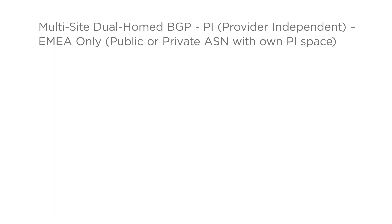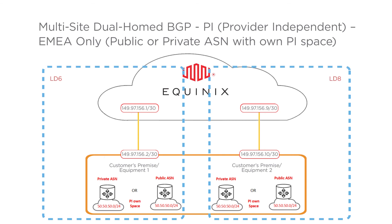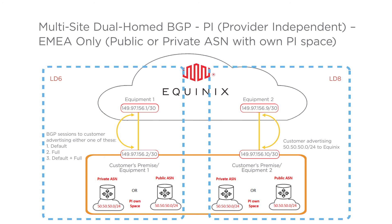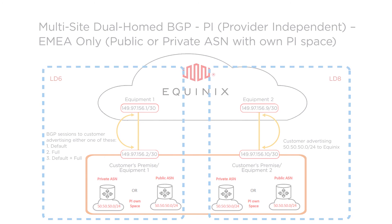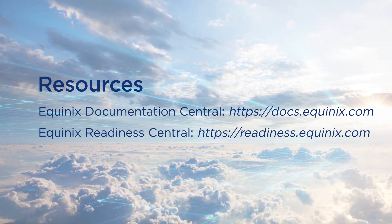Multi-site dual-homed BGP, PI — provider-independent, EMEA only — public or private ASN with own PI space. This is similar to the previous example where the customer takes a dual-home service split across two sites, except here the customer has their own PI space. The customer's own subnet has to be greater than or equal to /24. They either have their own public ASN or are using a private ASN assigned by Equinix. Equinix provides two IPv4 /30s or two IPv6 /126s for configuration, free of charge. BGP policy is used to select default routes, full routes, or default plus full routes. This concludes the video series on configuring Equinix Connect. Thanks for watching.